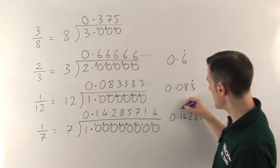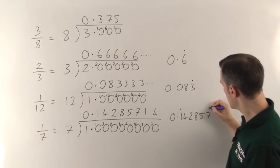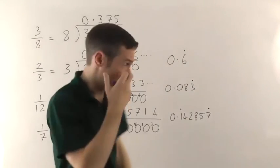So it's going to be 0.1 with a dot over it through to 7 with a dot over it.